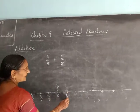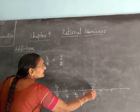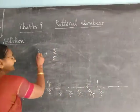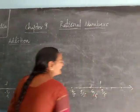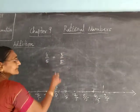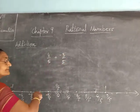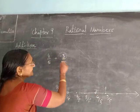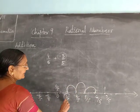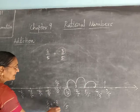Then on the positive side: 1 by 5, 2 by 5, 3 by 5, 4 by 5, then 5 by 5 which is 1. Now, 4 by 5 is your starting point. Then minus 3 by 5 — minus means move to the left. From 4 by 5, move 3 steps to the left: 1, 2, and 3. The number you reach is 1 by 5. So the answer is 1 by 5. Therefore, 4 by 5 plus minus 3 by 5 is equal to 1 by 5.